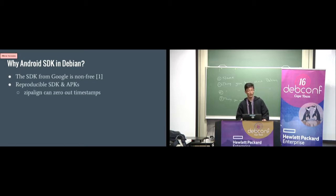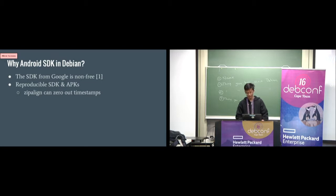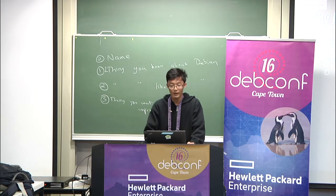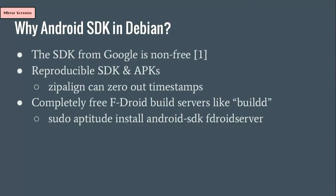The next reason is by packaging SDK into Debian, we can build it from source and we can make sure the SDK is reproducible. And we can make sure the SDK can produce a reproducible APK. For example, my mentor Hans Christoph Steiner has patched ZipAlign to add an option to zero out the timestamps inside the APKs. And we can also deploy completely free FDroid build servers, provided that Android SDK is in Debian — you can use one line of command to install everything to deploy a build server of FDroid.